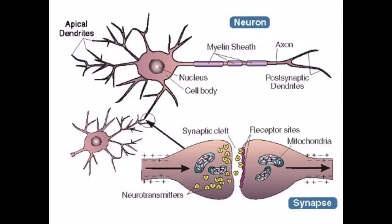Normal neuron function goes as follows. A neuron cell in the brain receives an impulse at the apical dendrites, and this impulse is carried through the neuron cell all the way down the axon to the axon terminal. Once it is at the axon terminal, it is released through a synapse to the next neuron cell. This space in between is called the synaptic cleft, and the impulse is carried through neurotransmitters.